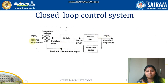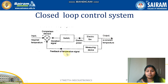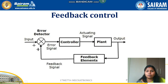For example, we set a required temperature and switch on the system. The output should be a constant temperature. If there is any deviation, the feedback signal is given to the comparison element and the process is repeated. This is about the closed loop control system.